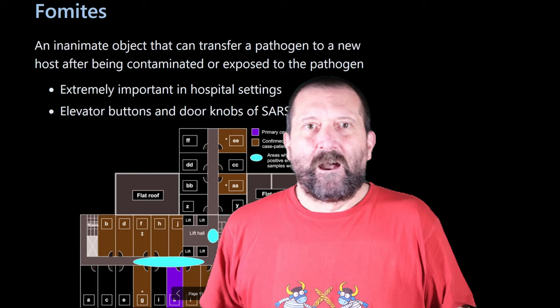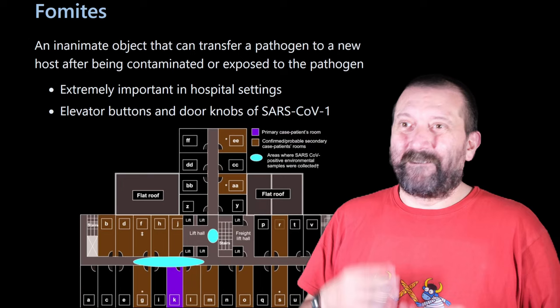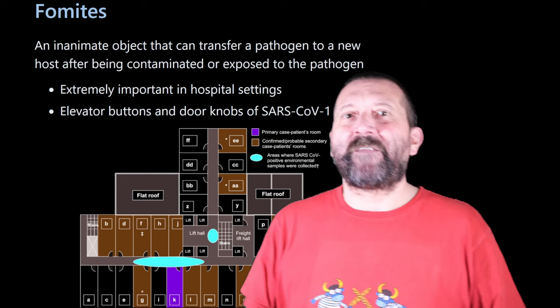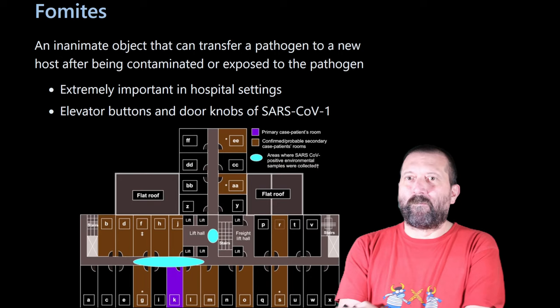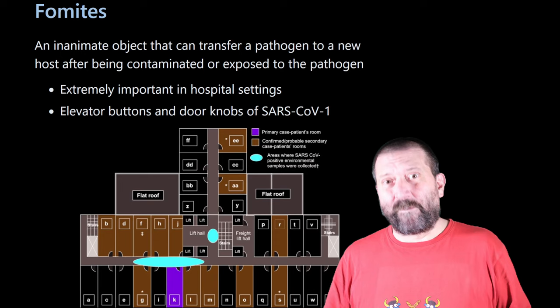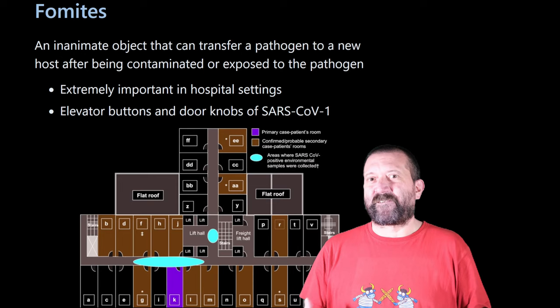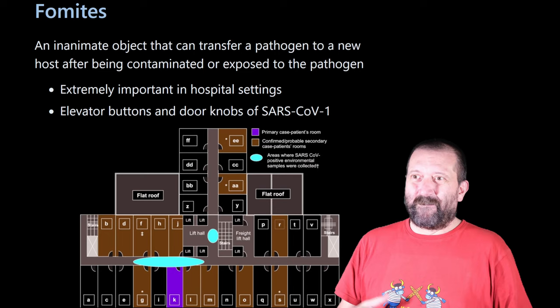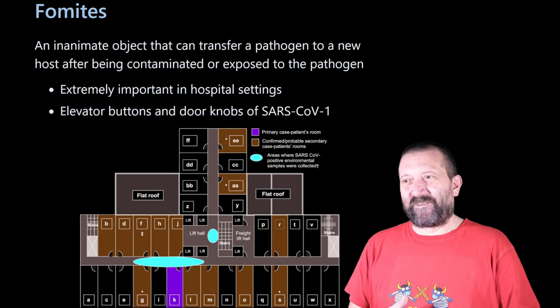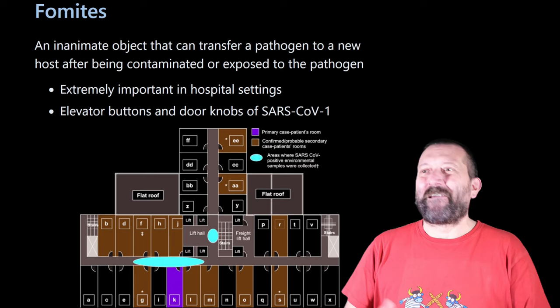A fomite is an inanimate object that can transfer a pathogen to a new host when that object itself is contaminated or exposed to the pathogen we're thinking of. This is going to be a very important topic when we consider hospital settings — hospital-acquired infections, or nosocomial infections — which we will look at within this course. They can be carried by fomites if proper care of the settings is not done.